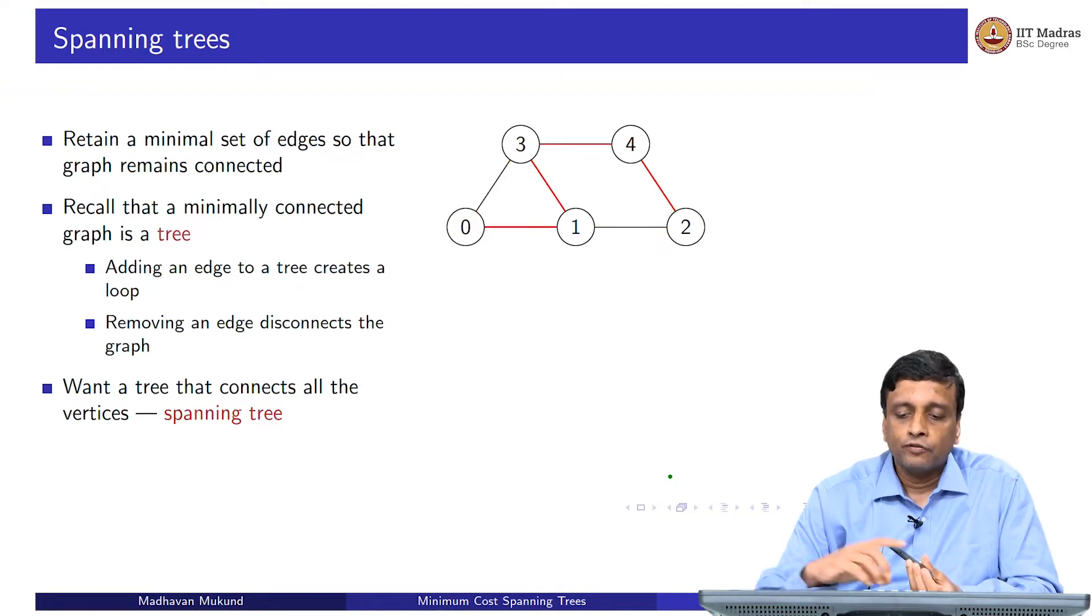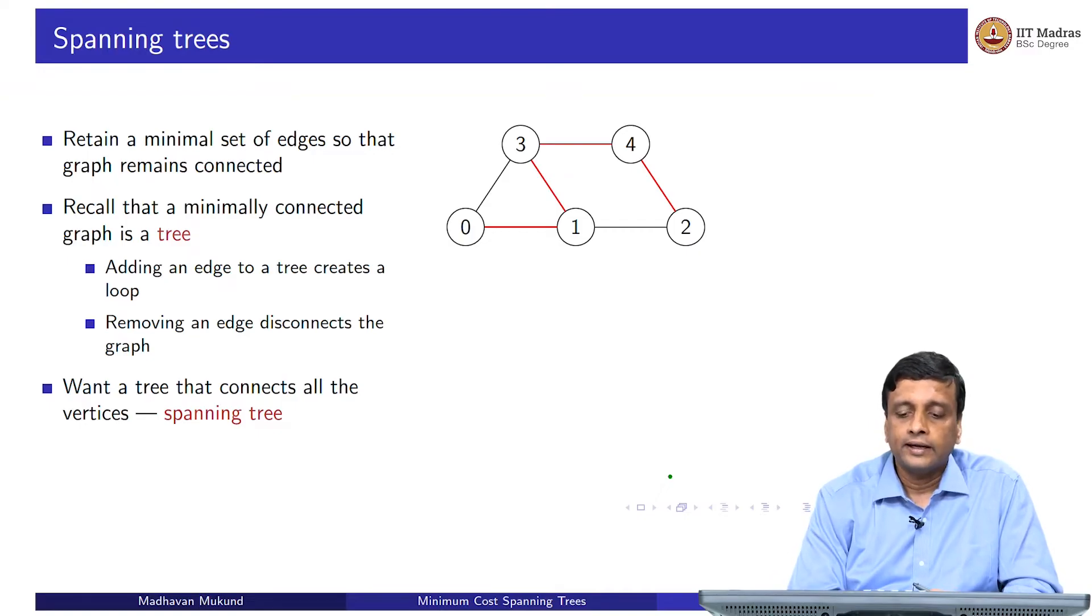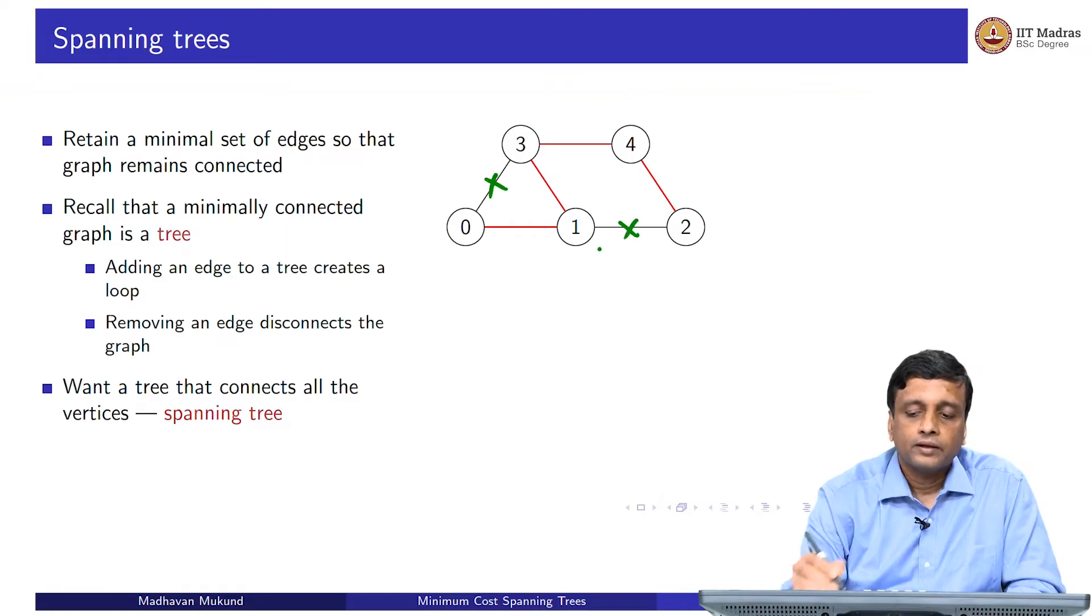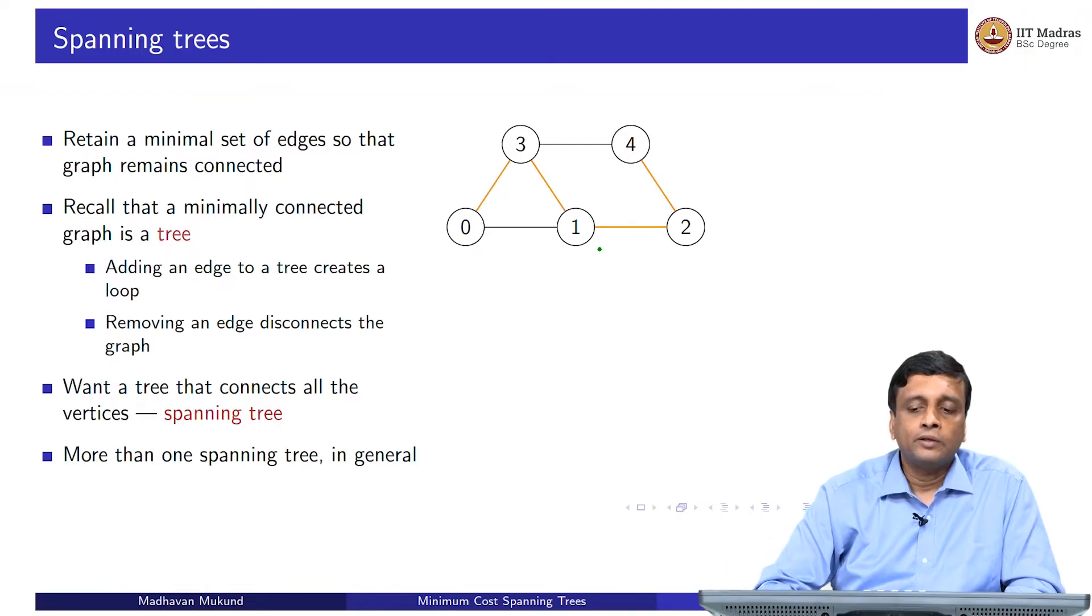In general, you could have more than one spanning tree. Here, for instance, the red graph that we have drawn is a spanning tree. It connects 0, 1, 3, 4, 2. So it leaves out these two edges and still it connects everything. So this is one spanning tree. We could also have a spanning tree with these four edges 0, 3, 3, 1, 1, 2 and 2, 4, which leaves out two different edges.